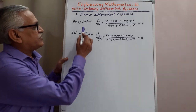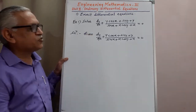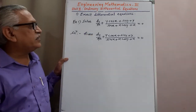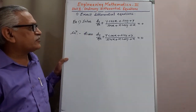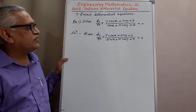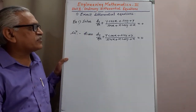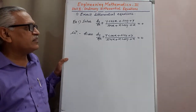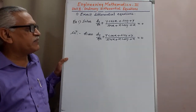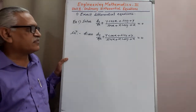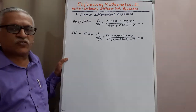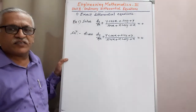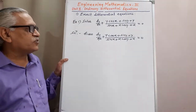Let us see the first example. Solve: dy/dx plus (y cos x + sin y + y) divided by (sin x + x cos y + x) equals 0.